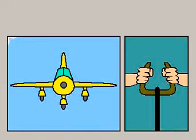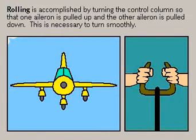An aircraft has three different lines of flight. It can roll, yaw, and pitch.